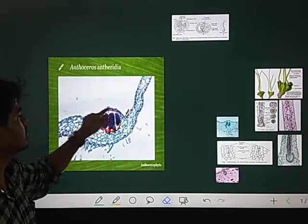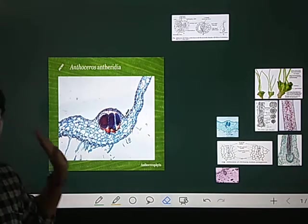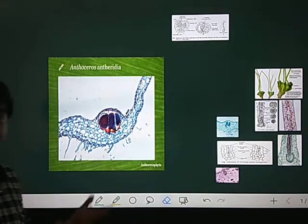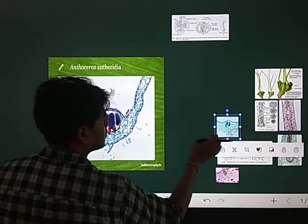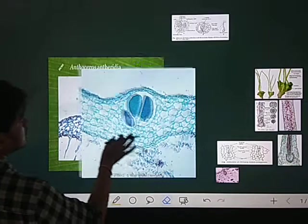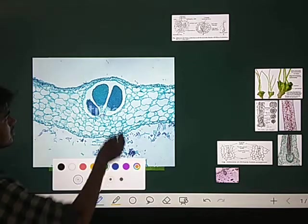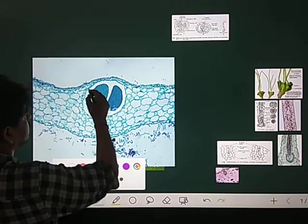You can see the thallus in transverse section. In this thallus, there's the antheridial chamber, and inside the chamber are the antheridia. The same photograph is here but a little bit clearer - the chamber is very clear, you can see that space.